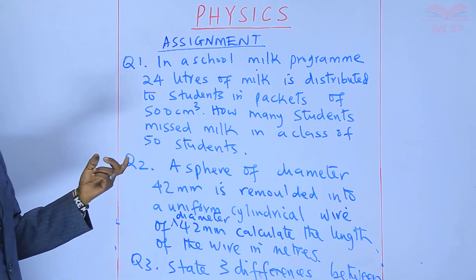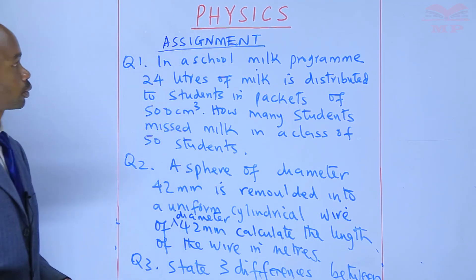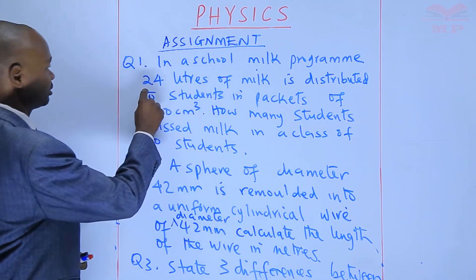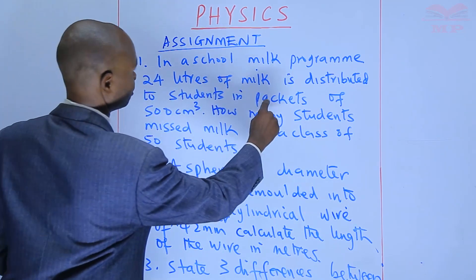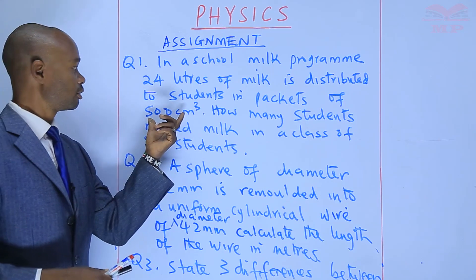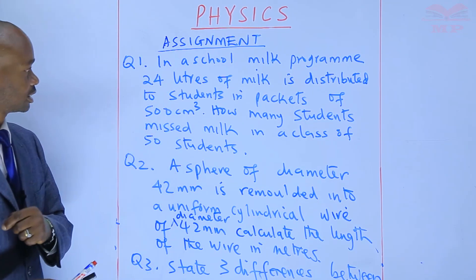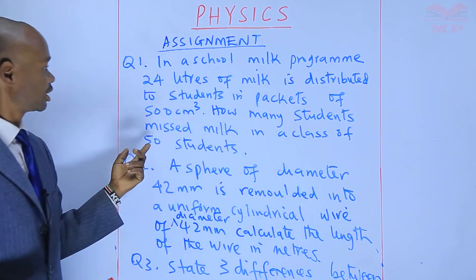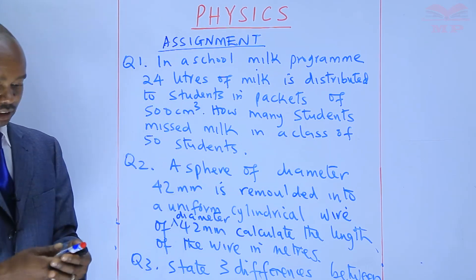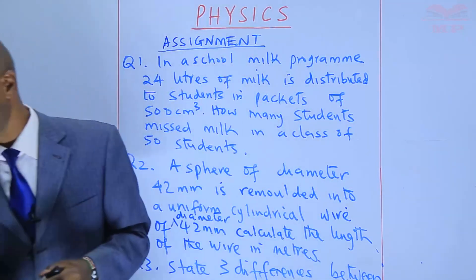Question one — Measurement. In a school milk program, 24 liters of milk is distributed to students in packets of 500 cubic centimeters. How many students missed milk in a class of 50 students? So we shall go to the solutions.